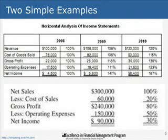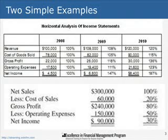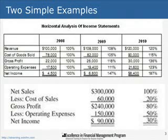The example below shows vertical analysis. We have net sales of $300,000, shown at 100%. Gross profit is 80%, meaning for every dollar of net sales, $0.80 is gross profit. Net income is $0.30 of that dollar, so return on sales is 30%. Vertical analysis gives you insights into some of the ratios we'll discuss in the next slides.